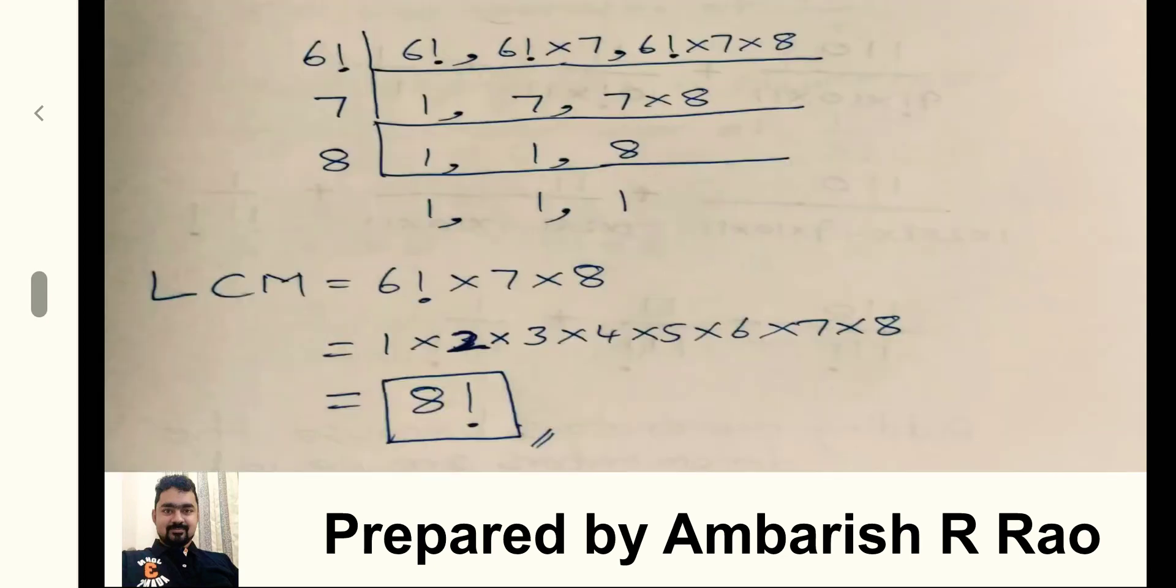Let us arrange it in a traditional way. 6 factorial, 7 factorial can also be written as 6 factorial into 7, and 8 factorial can be written as 6 factorial into 7 into 8. We have separated them with commas.